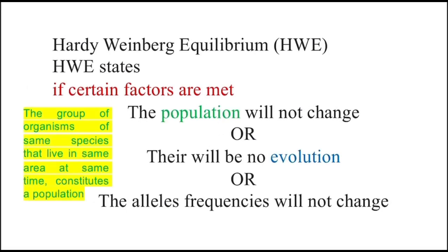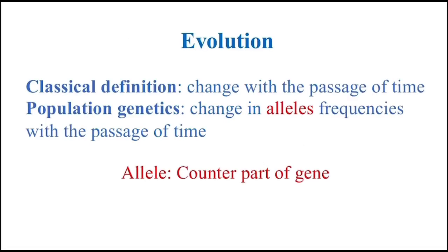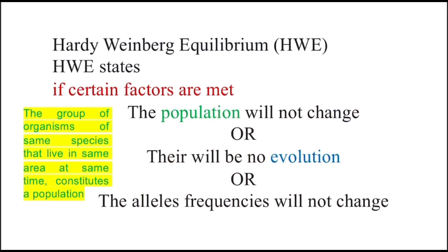Population is the group of organisms of the same species that live in the same area at the same time. Evolution is the change with the passage of time, or according to population genetics, change in allele frequencies with the passage of time. HWE states that the population will not change or the allele frequencies will not change if certain factors are met.